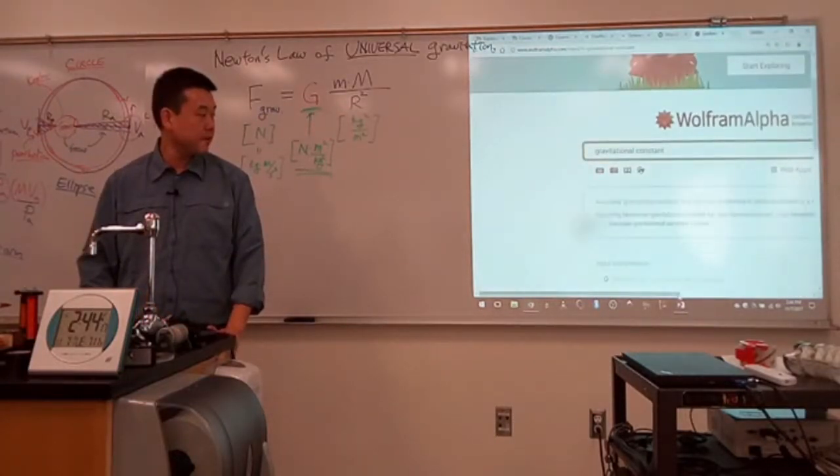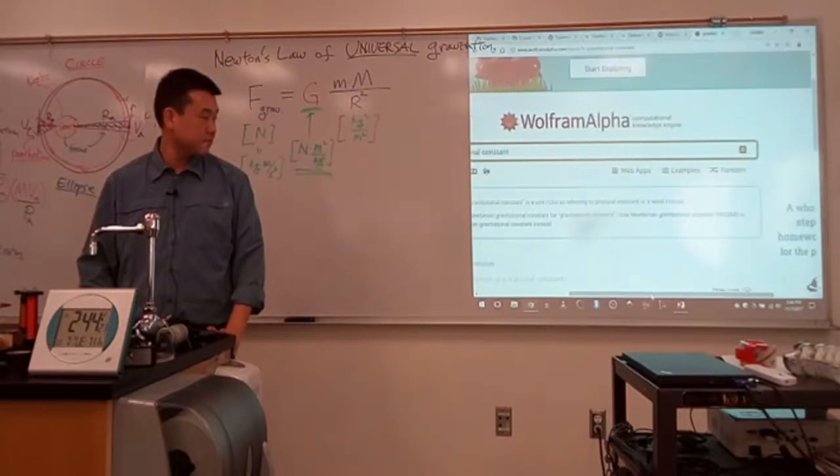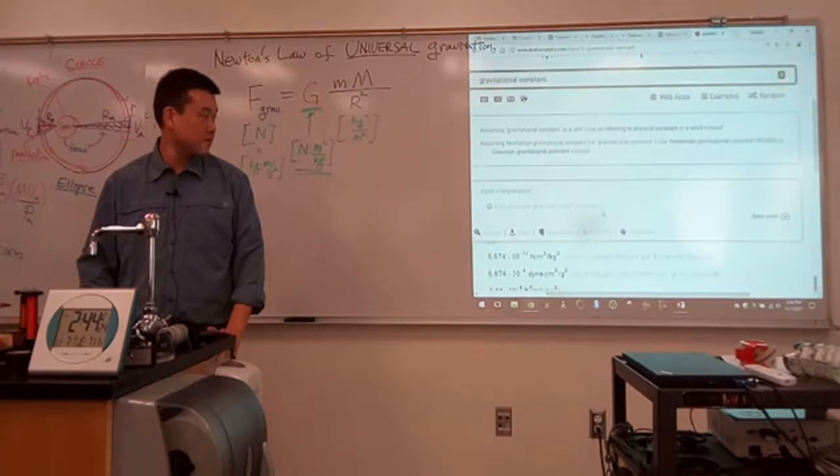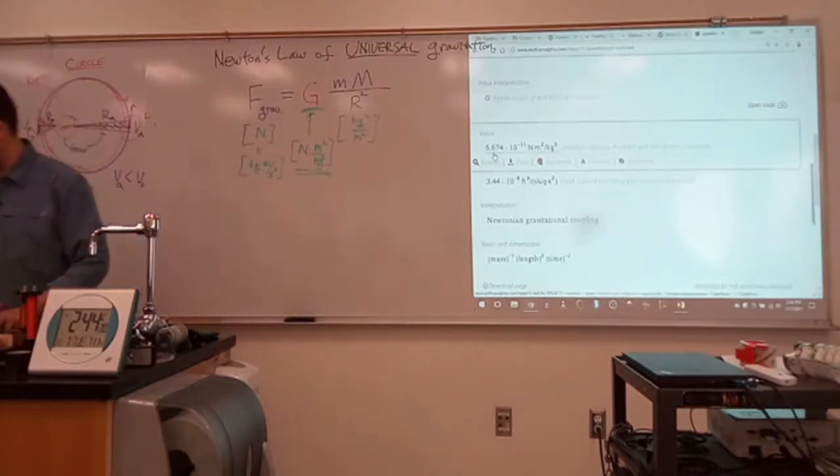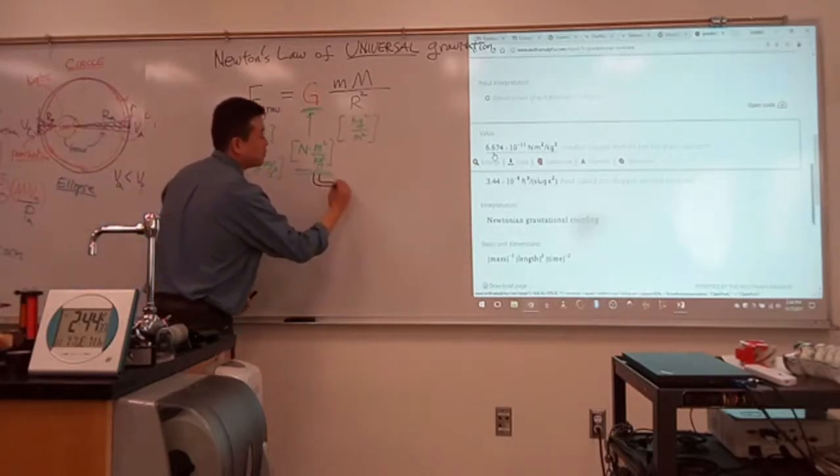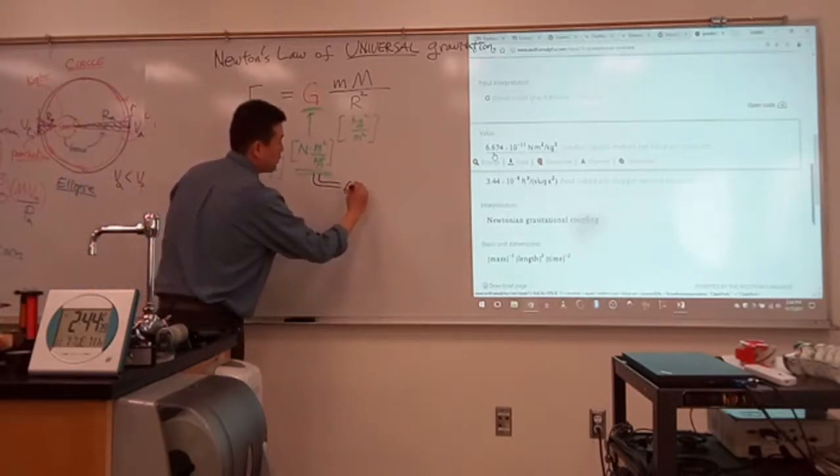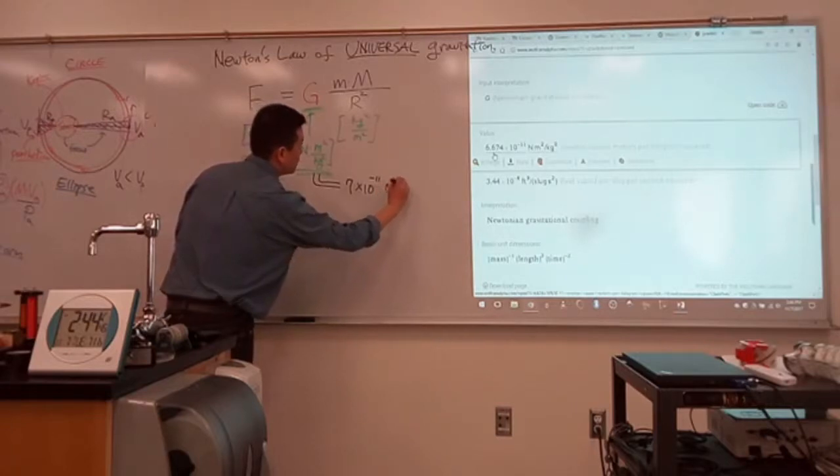So, gravitational constant. So, it's such a small number that Newtonian gravitational constant, all right. This seems right. Yeah, capital G, not lowercase g. There it is. 6. So, the value of this g in this unit, the exact unit we said, is equal to 6. So, approximately 7 times 10 to the minus 11 newton meter squared per kilogram squared.